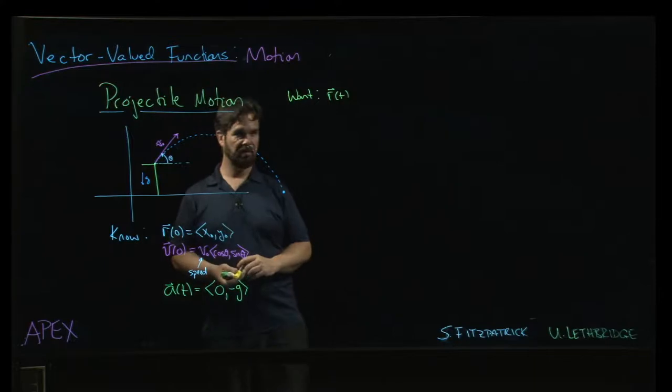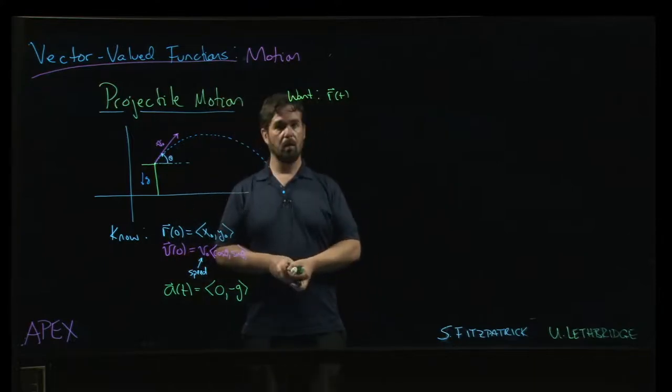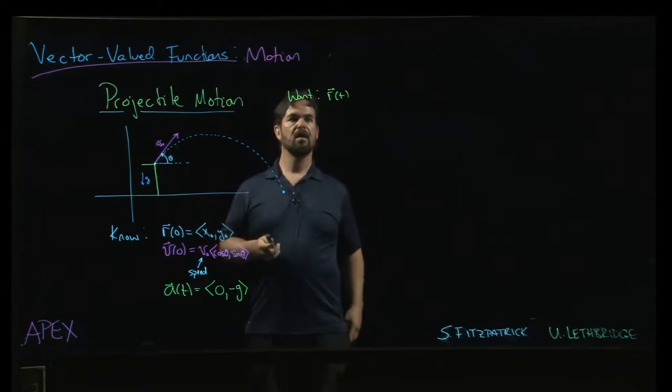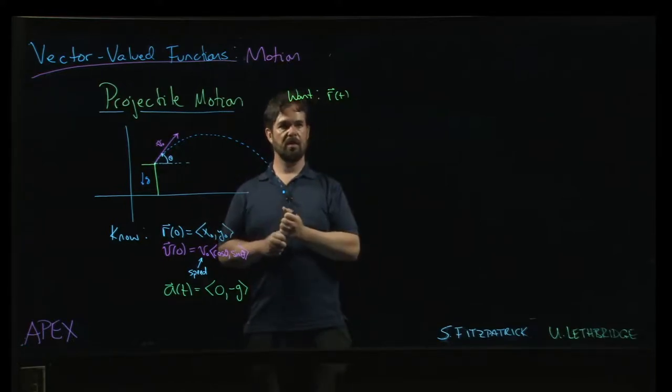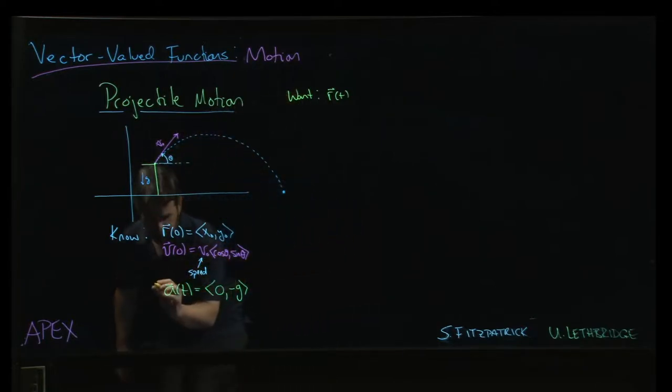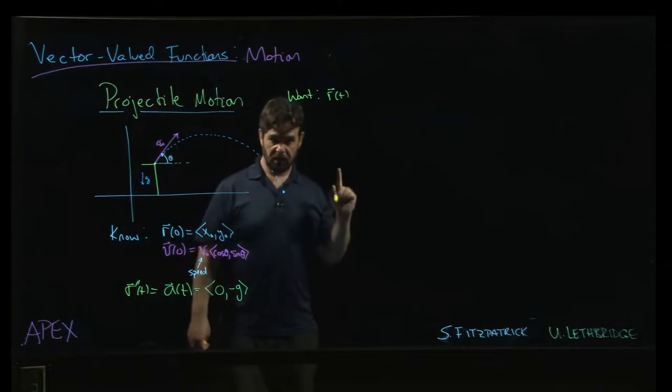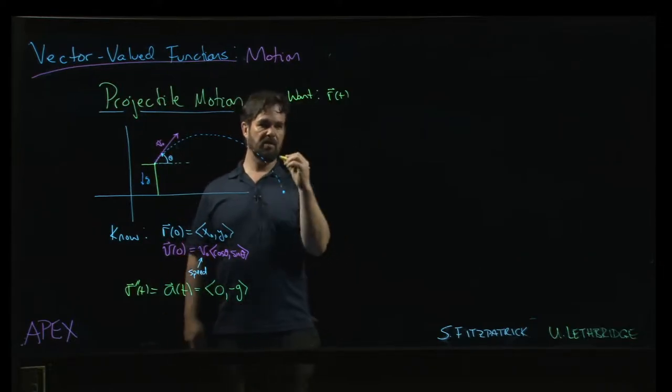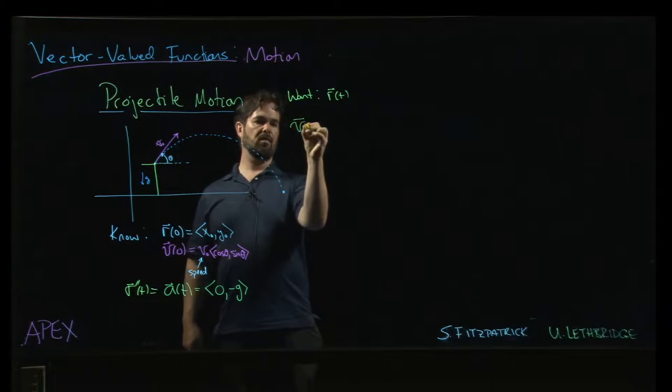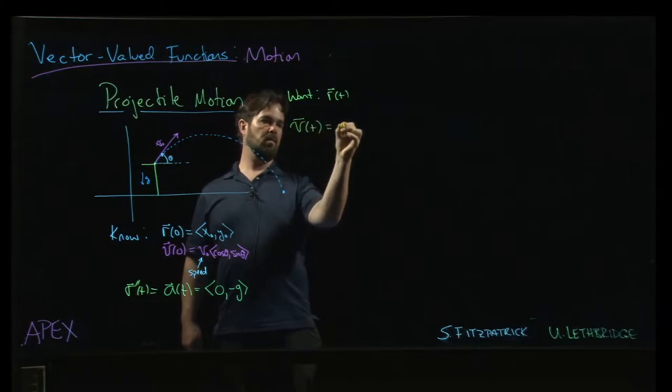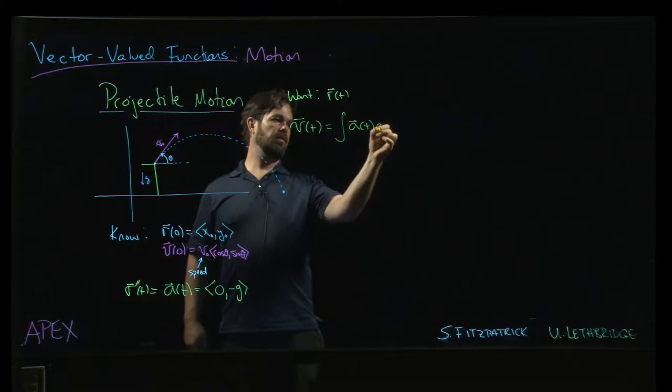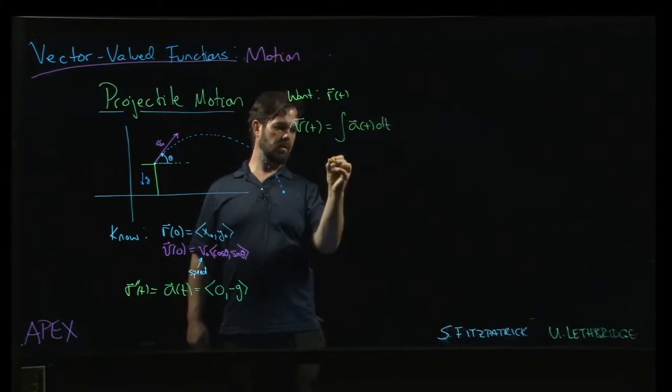So how do we proceed? Well, it's an anti-derivative problem. We want to get to r of t. We know that the acceleration is the second derivative of position. Velocity is the first derivative of position. Acceleration is the derivative of velocity, so velocity will be the anti-derivative of acceleration.